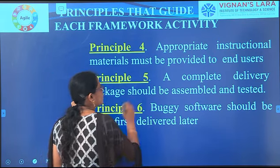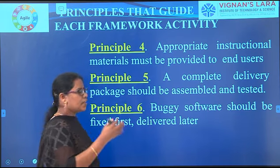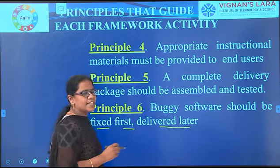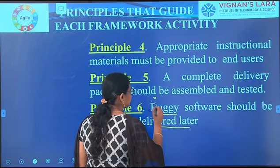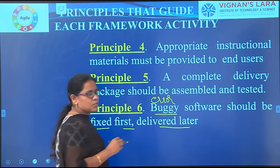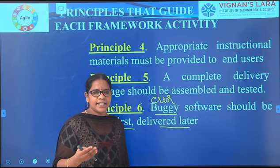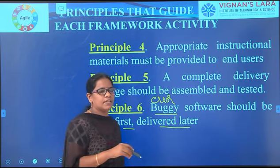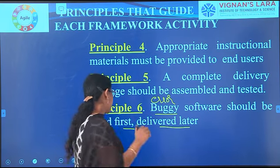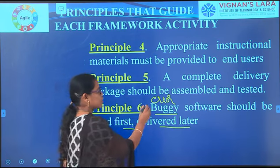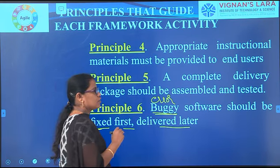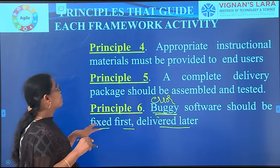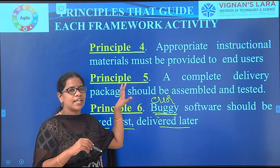Principle five is again that a complete delivery package should be assembled and tested. Principle six is: 'Buggy software should be fixed first and delivered later.' Buggy software means software with errors. While interacting with software, if you get any errors or wrong pop-up messages, you have to fix those errors and remove them before delivery. In software, errors are also called bugs.